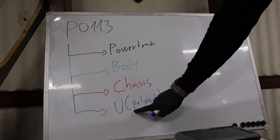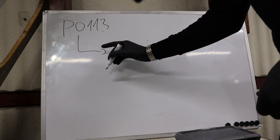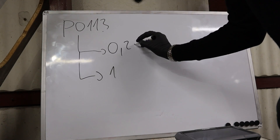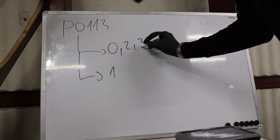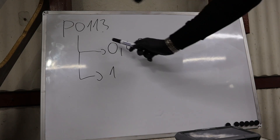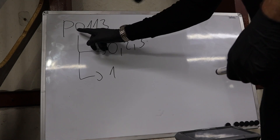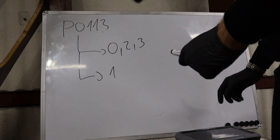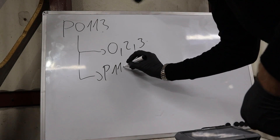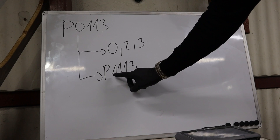Now, the second digit — you will mostly see either zero, one, two, or three. The difference is very simple. If you see zero, two, or three, that means the code is generic and can be applied to every car brand. But when you see one as the second digit, for example P1113, that means the code is manufacturer specific — so it can have a different meaning for Audi than it has for Chevrolet.